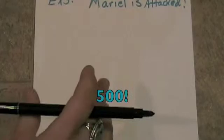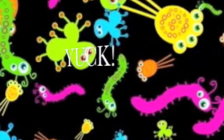Muriel gets sneezed on — somebody sneezes on her right as she is breathing in. 500 bacteria get breathed into her nasal cavity and they sit there. Over a period of time they split and become 1,000 bacteria. And then those 1,000 split and become 2,000, and so on.